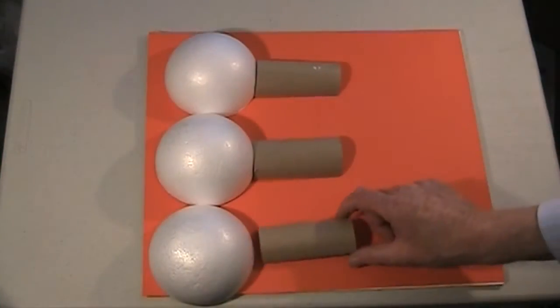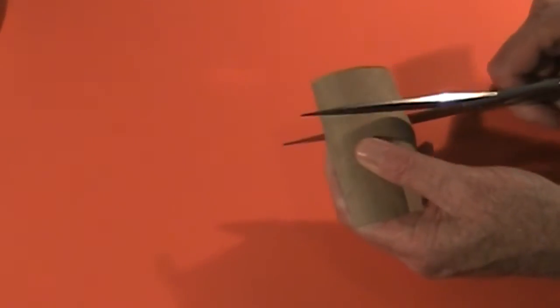One of the halves will be another tunnel. Cut the last third of the other half. This will be your entrance.